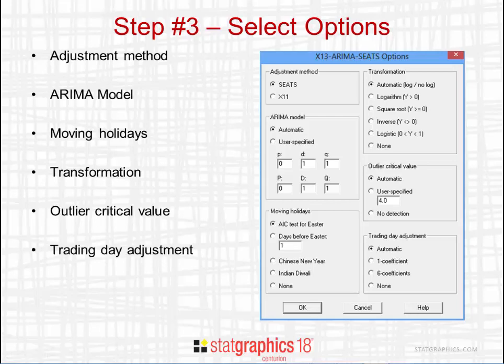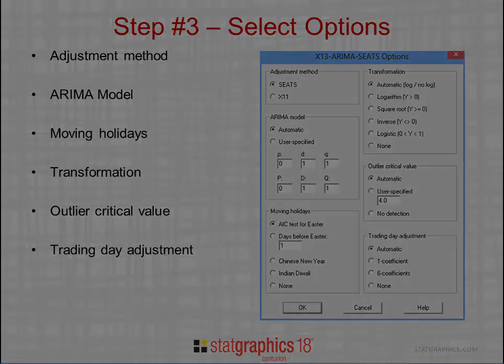You can also ask the program to adjust your data for the number of trading days in the month. There are two possible selections: a one-coefficient model or a six-coefficient model to make the trading day adjustment. Or if you select automatic, it will choose automatically between those two choices.